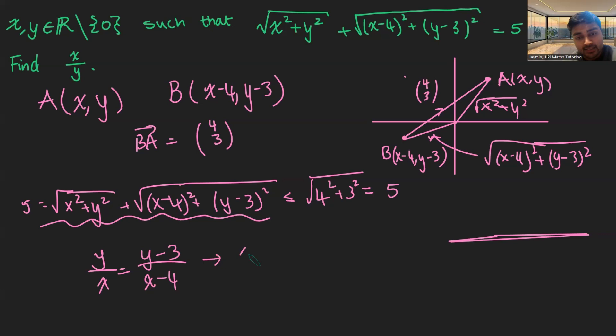Let's just rearrange this. We're going to get xy minus 4y equals xy minus 3x. Canceling those xys, rearranging, we're going to get x over y is minus four over minus three, which is four thirds. And that there gives us our solution.